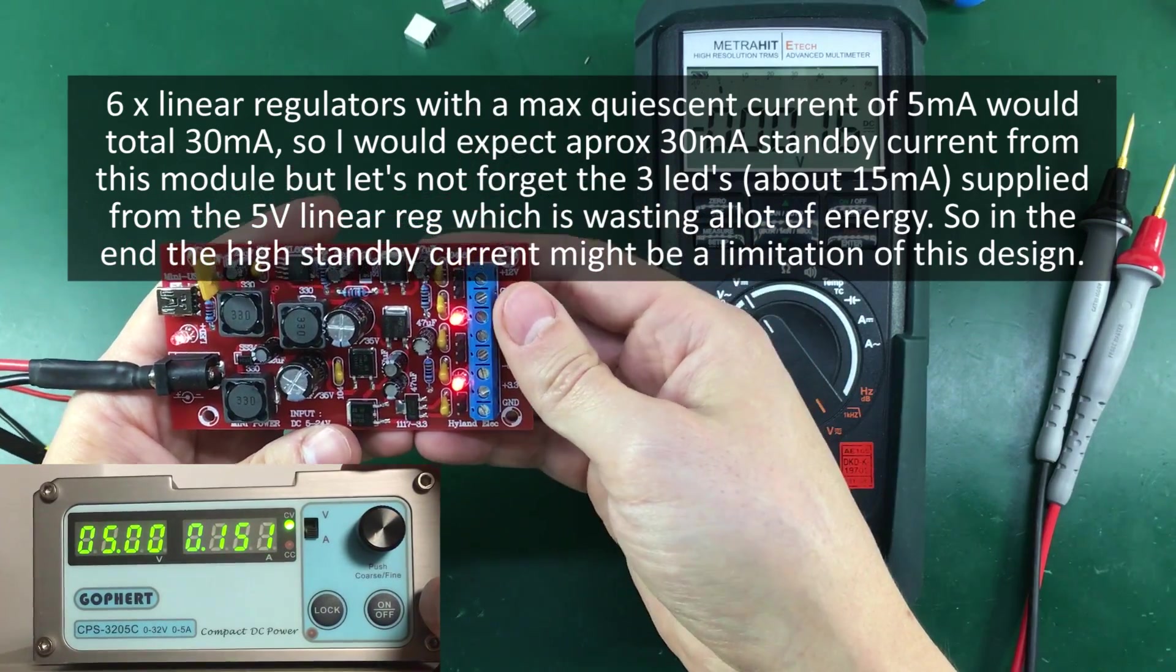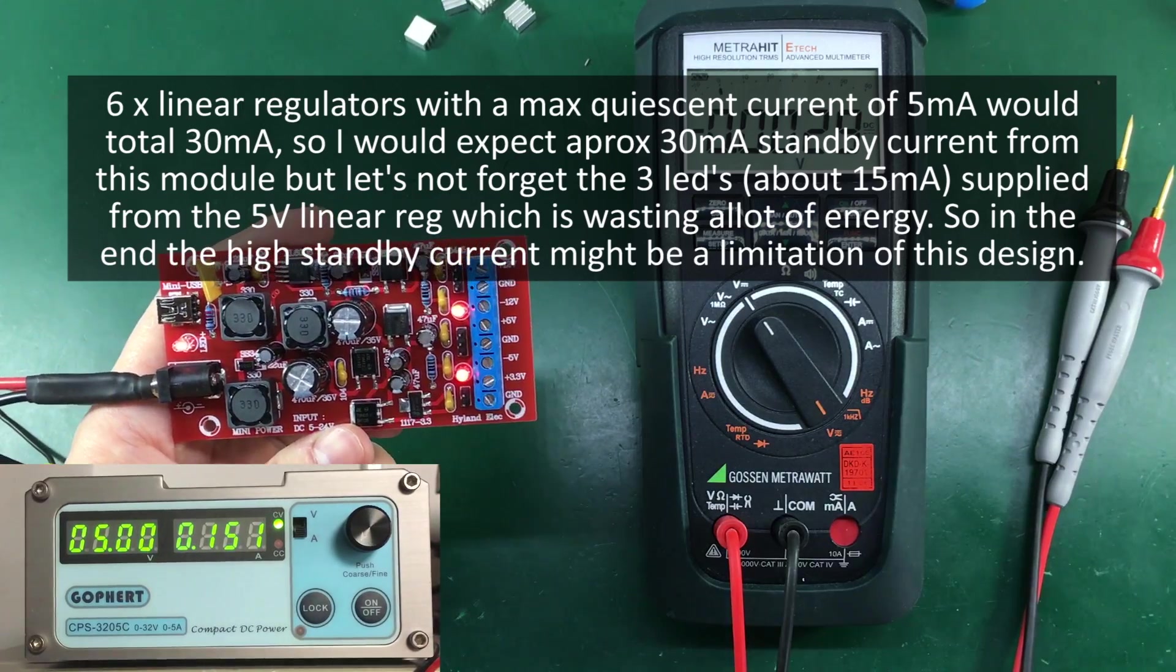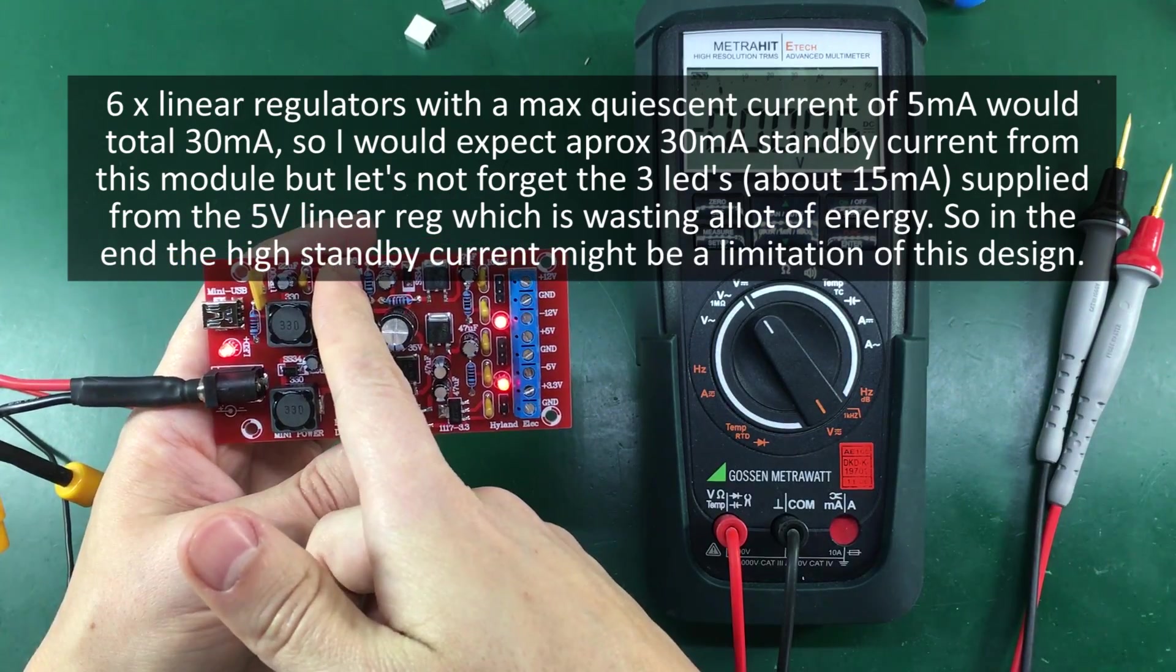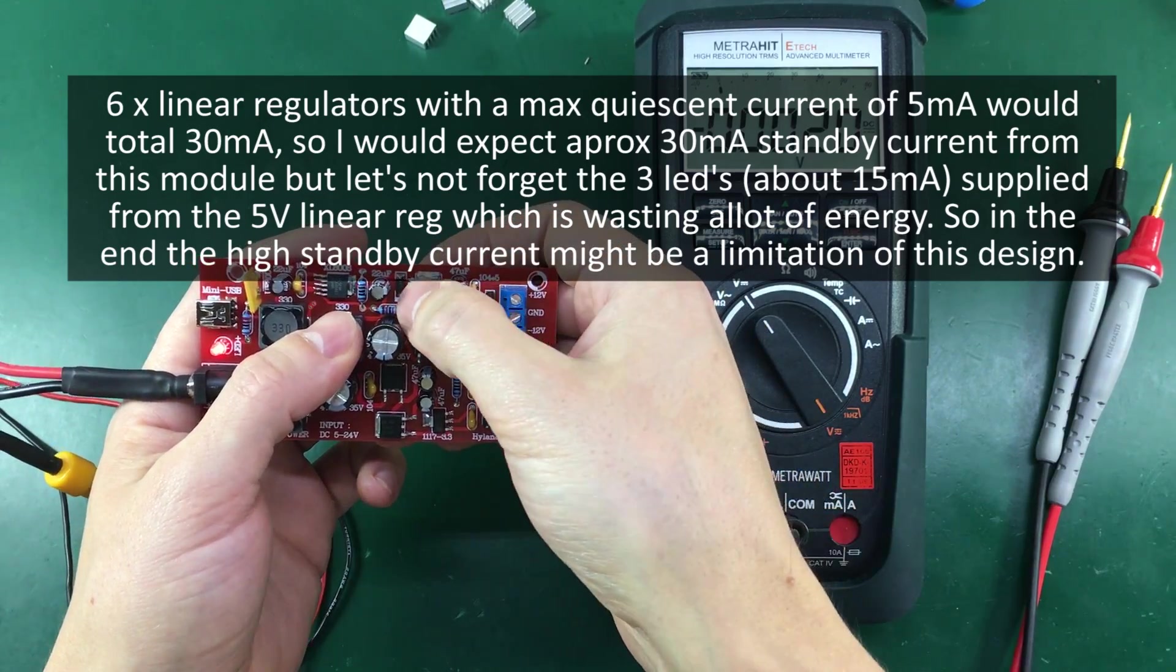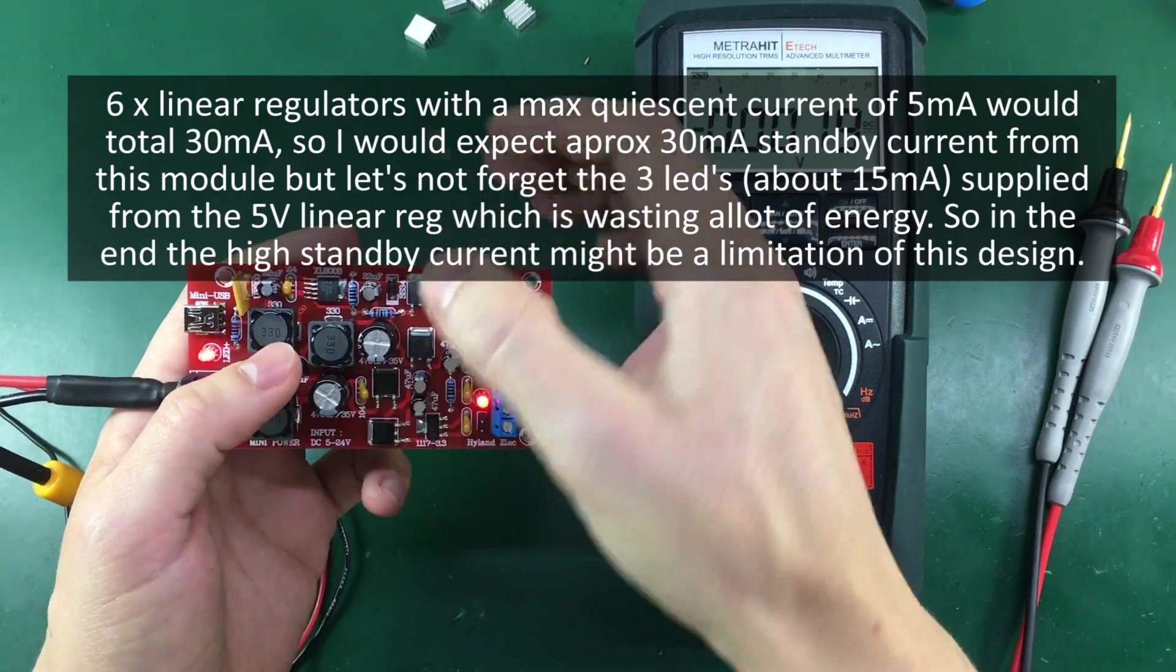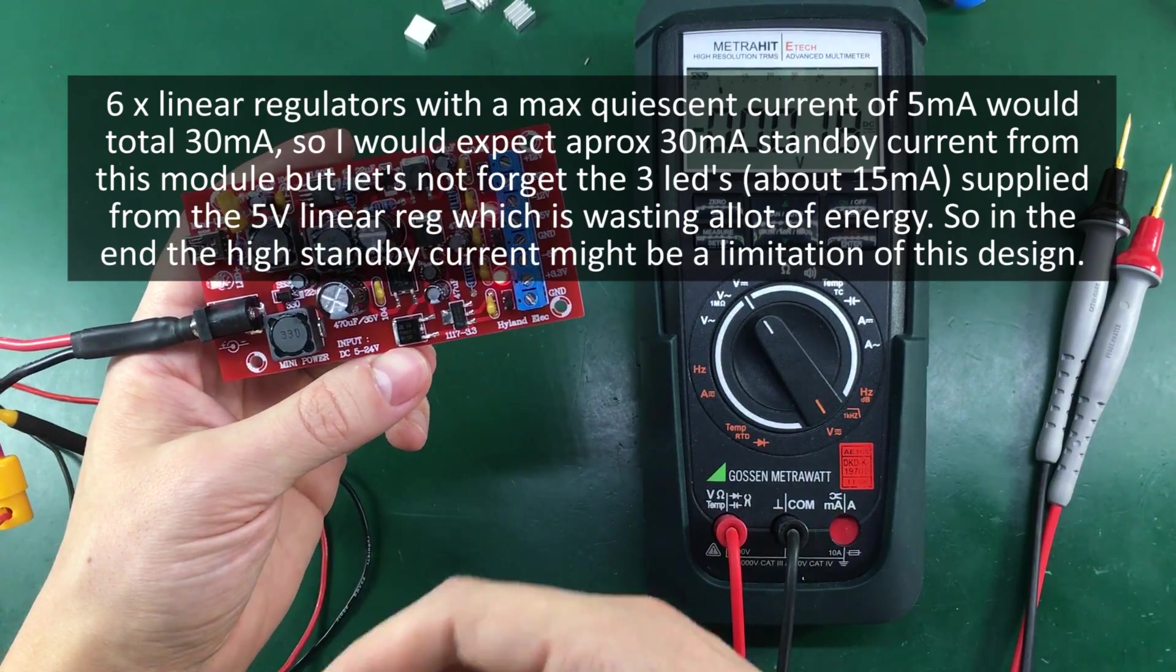And right now it's pulling a hundred and forty milliamps. So it needed that start up current possibly to get this step up switching regulator running and then once the switching regulator has started and has reached the required output voltage everything works and the current draw drops.